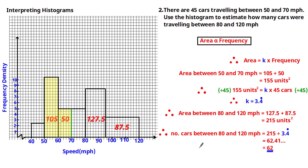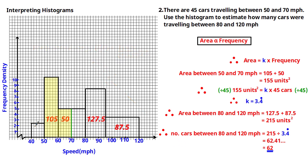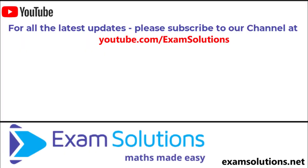To summarize: we've looked at different ways to interpret histograms using the formula frequency density = frequency ÷ class width. We've looked at the importance of appropriate scaling when the diagram doesn't provide it, discussed the assumption that data points are evenly distributed within class intervals, and saw how to use the relationship between area and frequency. I hope that was useful — keep up the good work! If you liked this video, give us a thumbs up, leave comments below, and subscribe to the channel.